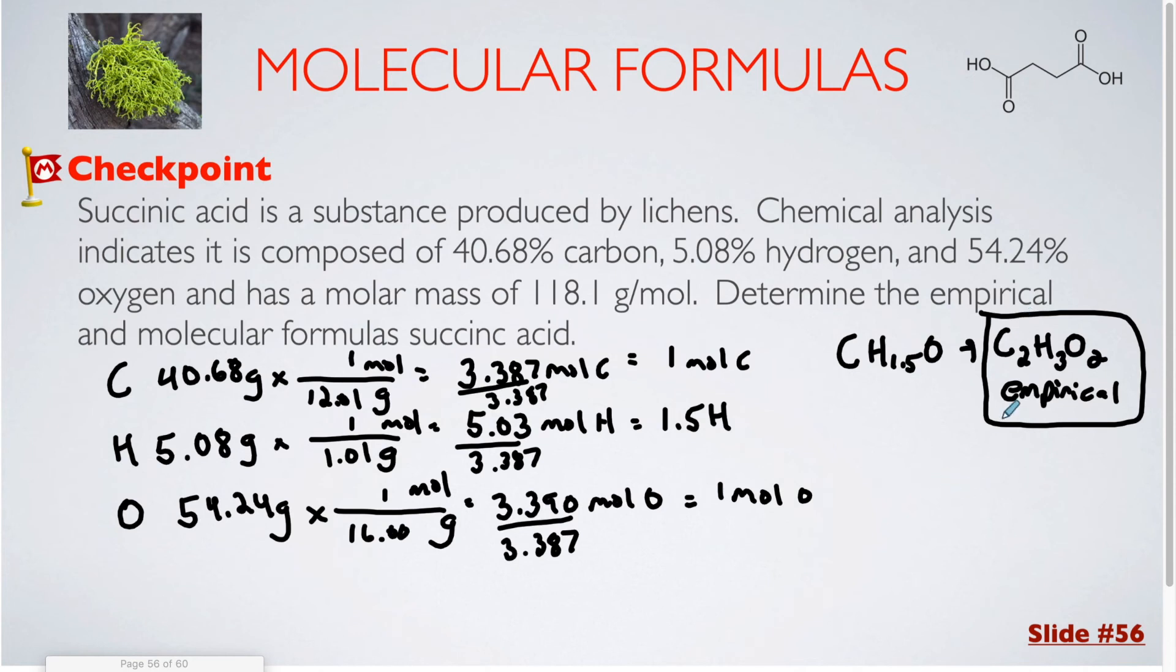Now if I were to add up the masses for each of these elements, that gives me a mass of 59.05 grams per mole. They told me that the molar mass of the molecular compound is 118.1. So I have 118.1 grams. I'm going to divide that by the 59.05. That's going to give me 2.